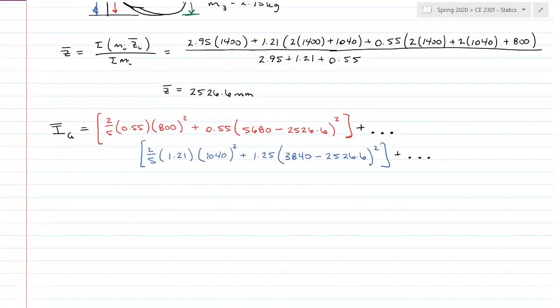So still working with green, still has the same equation for mass moment of inertia about the sphere centroid, which is 2/5 of the mass, 2.95, times its radius, 1,400 squared, plus the mass, 2.95, times distance from its centroid to the mass center squared, end bracket.